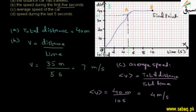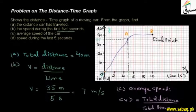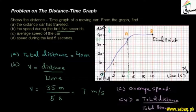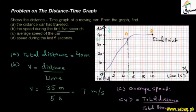Now if we look at this physically, the average speed of the car is calculated from the overall motion of the car. We have found this out using the formula: average speed equals total distance divided by total time.